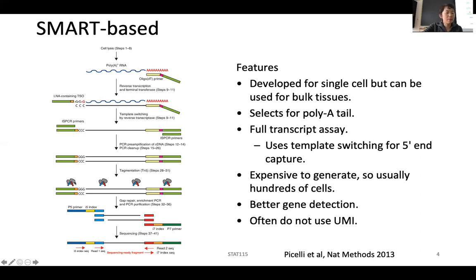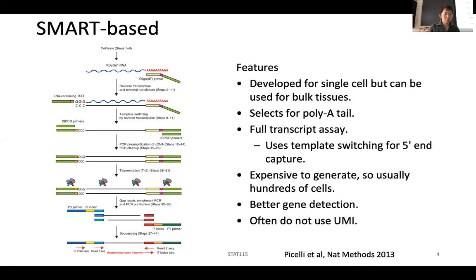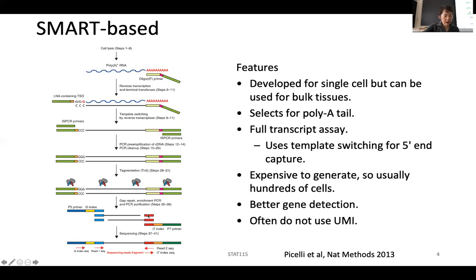Then there is an enzyme called transposase that is really being used a lot now. Whenever it sees double-stranded DNA, it will randomly insert a little piece of DNA sequence — it cuts and inserts that sequence. The sequence inserted is related to the sequencing primer, so if one primer is inserted on one side and another on the other side, you can amplify anything in between. Basically, random pieces of the cDNA get amplified, and then you can sequence these fragments from both ends using paired-end sequencing.